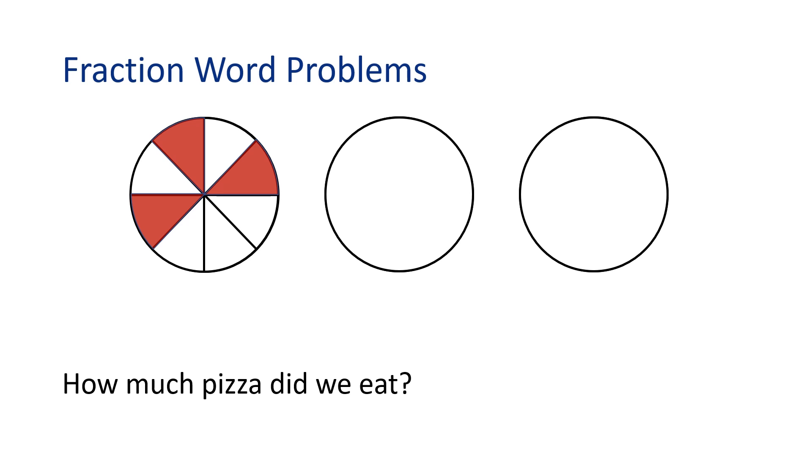By the picture, I can see we ate two whole pizzas. Now let's count the blank areas on the first pizza where there were slices. One, two, three, four, five. We ate five out of eight slices on that pizza. That means all together we ate two and five-eighths pizza.